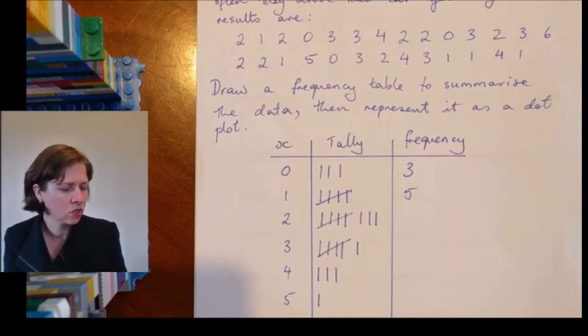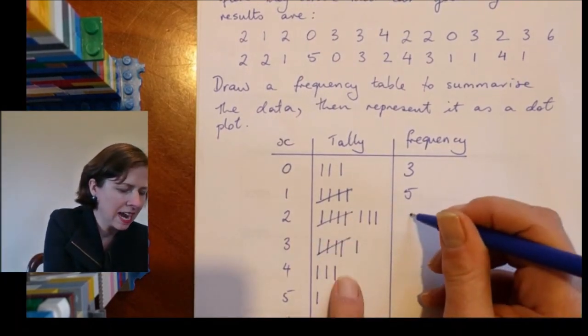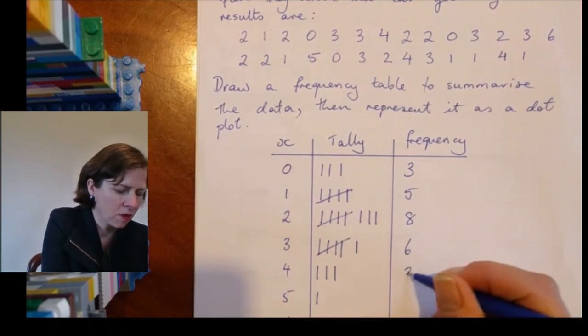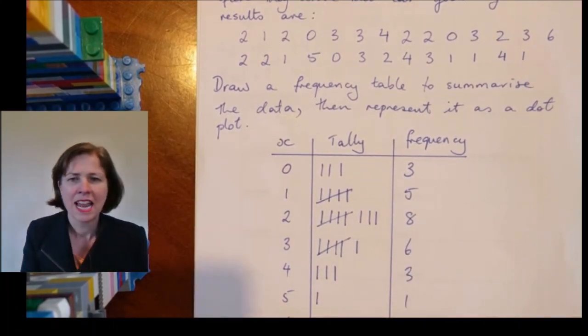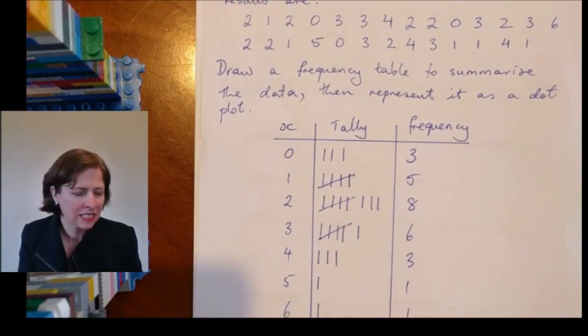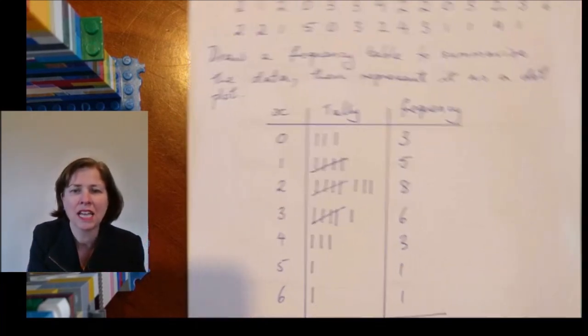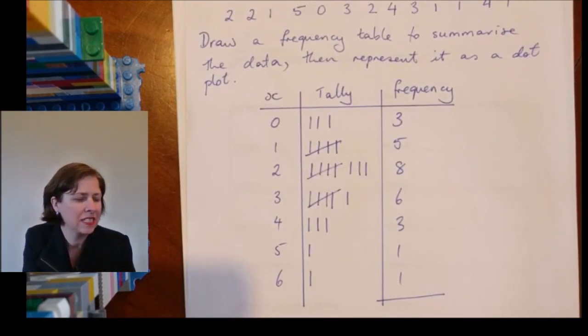So there are a couple of different ways I can do this. I'll just keep filling in my frequency: that's eight, six, three, one, and one. Now to make sure I haven't made a mistake, it's very easy to make a mistake.